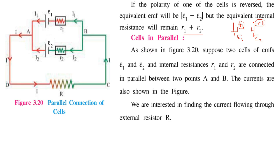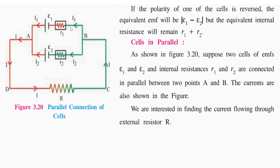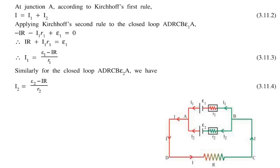Now, when cells are put in parallel: this is cell one, this is cell two — they are kept in parallel and we have an external resistance. Suppose we have two cells with EMFs E1 and E2 and internal resistances R1 and R2. The current I divides into I1 and I2; I1 passes through the first cell and I2 through the second. We want to find the current flowing through the external resistor. We will apply Kirchhoff's rules, knowing that I equals I1 plus I2, which is our first equation.